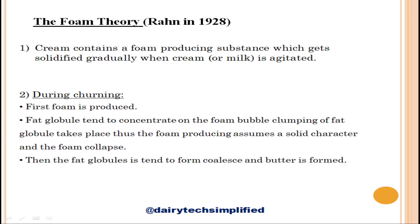Next is the foam theory, put forward by Rahn in 1928. According to Rahn, cream or milk contains a foam-producing substance which gets solidified gradually when cream or milk is agitated. First, foam is produced during churning, and due to surface tension, fat globules tend to concentrate on the foam bubbles, bringing them into such close contact that clumping of fat globules takes place. The foam-producing substance assumes a solid character, the foam collapses, the fat globules coalesce, and butter is formed.